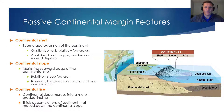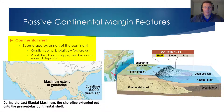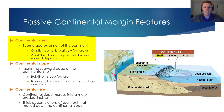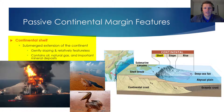Now let's look at the three primary features of passive continental margins. The first is the continental shelf, which you can think of as a flooded extension of the continent itself. Sea level has changed throughout time, and in the past, when sea level was lower, some of this continental shelf area was probably exposed as land. The continental shelf is gently sloping and relatively featureless, but it is of political and economic interest because it contains oil, natural gas, and other important mineral deposits.